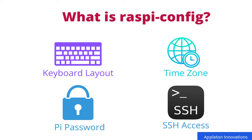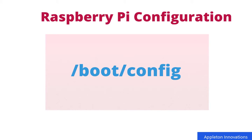When you make configuration changes using the Raspberry Pi configuration tool, this may result in automated edits to the /boot/config.txt file. You can change this configuration file directly, but it is not recommended. Now I'll be showing you how to change these settings using the raspi-config tool.